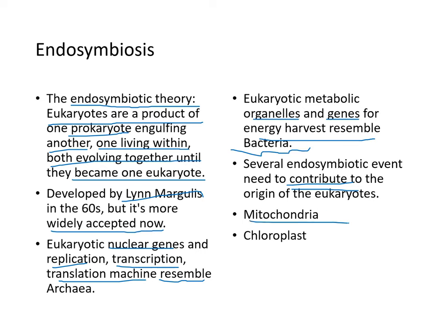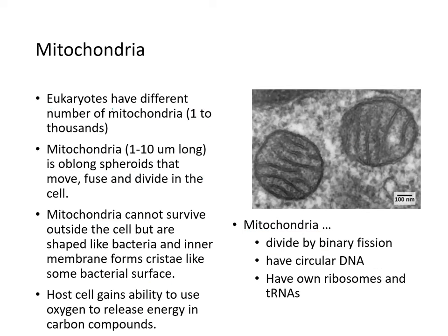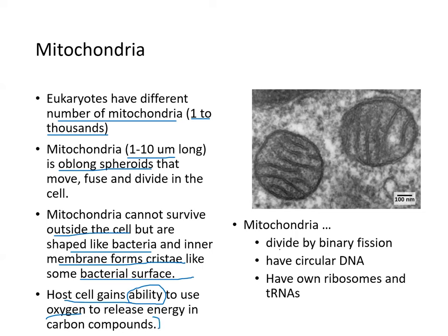Several endosymbiotic events contributed to the origin of eukaryotes — one involving mitochondria and another involving chloroplasts. Eukaryotes have varying numbers of mitochondria, some having one, others having thousands. Mitochondria are about 1–10 micrometers long, oblong spheroids that move, fuse, and divide within the cell. They cannot survive outside the cell but are shaped like bacteria, their inner membrane forms cristae like some bacterial structures, and they divide by binary fission, have circular DNA, and have their own ribosomes and tRNAs.